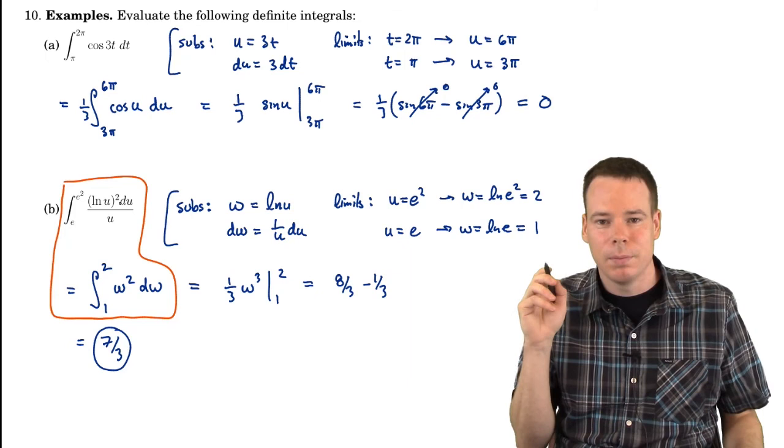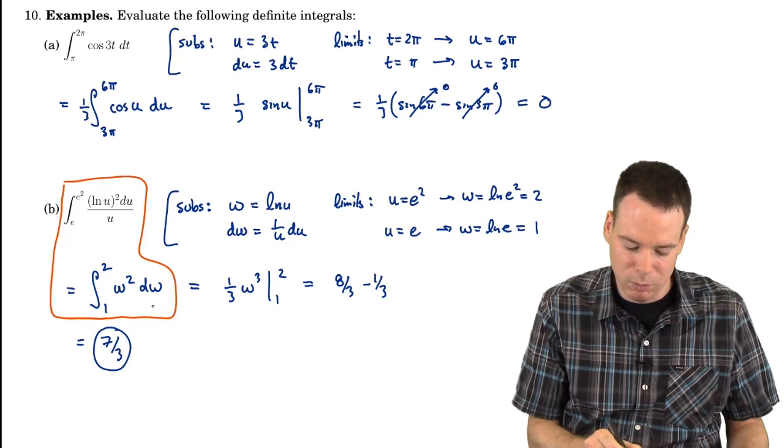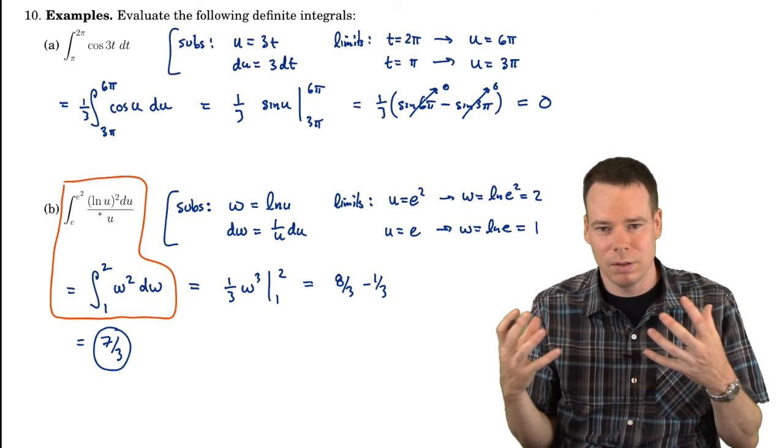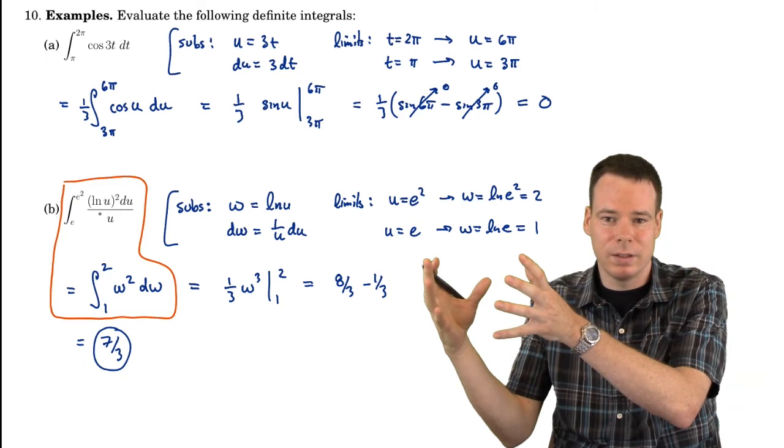But the benefit was, one of those regions was easier to work out the area of. And that was that second one with the squaring function. And so we worked out the area of that region, got it to be 7 thirds, and therefore we had the area of the first region was also 7 thirds. So this is the idea of the substitution rule, taking a complicated, what could be a complicated integral, converting it to one that's simpler and easier to deal with. That's equivalent.